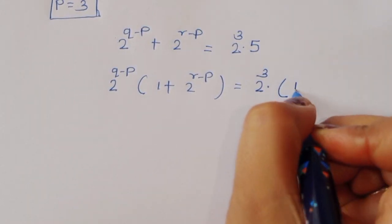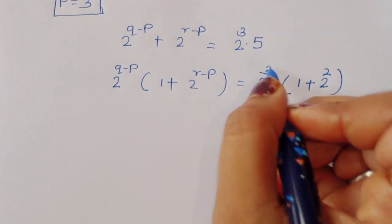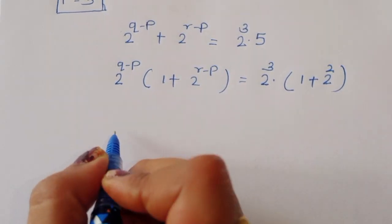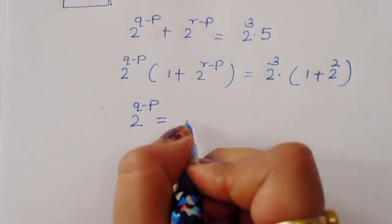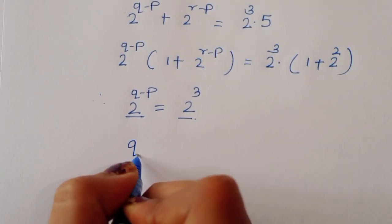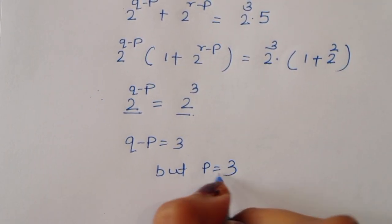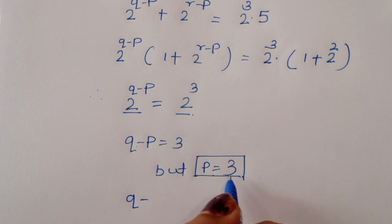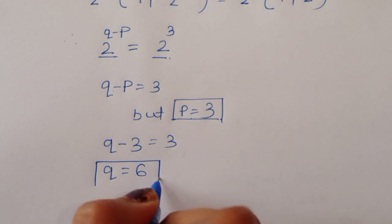Now 5 can be written as 1 + 2^2 = 1 + 4 = 5. Comparing both sides: 2^(Q−P) = 2^3, so Q − P = 3. Since P = 3, substituting gives Q = P + 3 = 3 + 3 = 6. So the value of Q is 6.